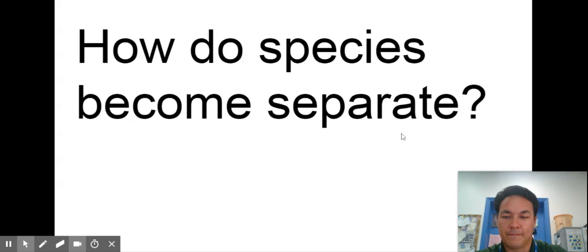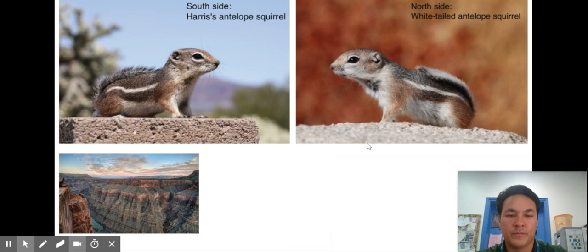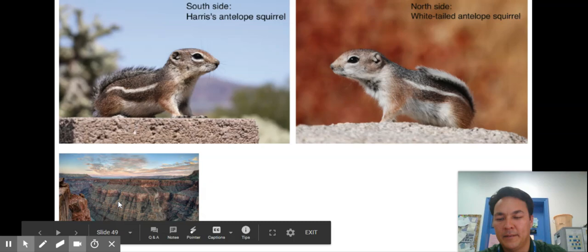Okay and from that we get different species that wouldn't be able to breed together and here's some real life examples so here a barrier came out this Grand Canyon and now we have two different types of species that won't breed together.